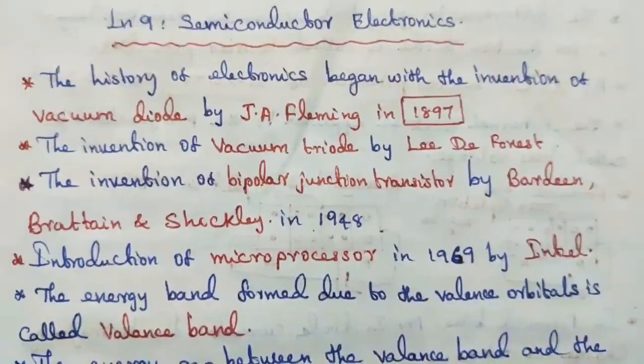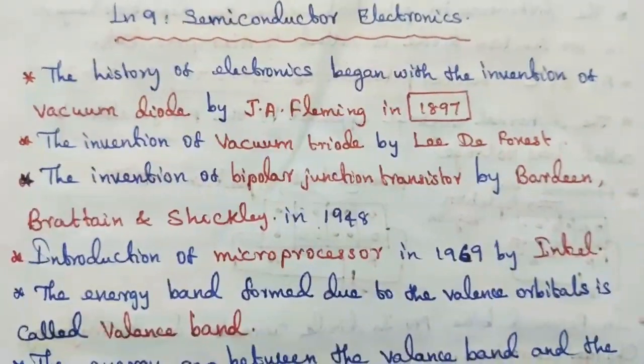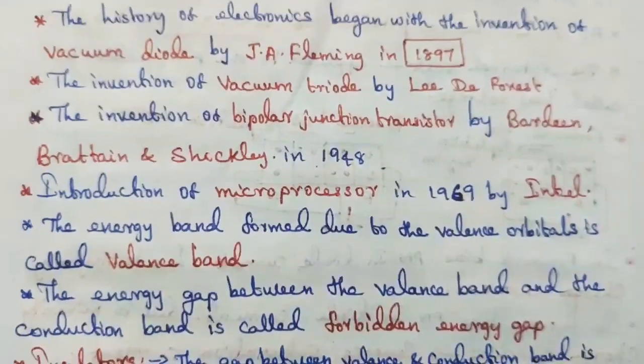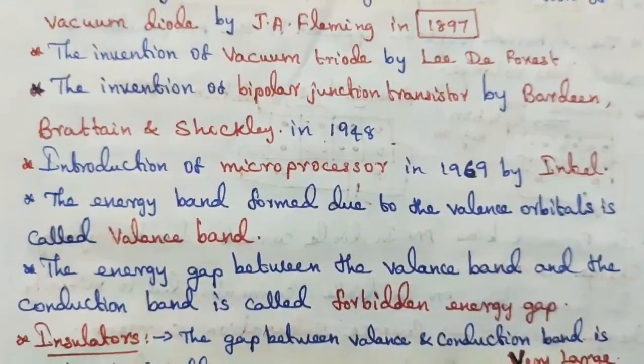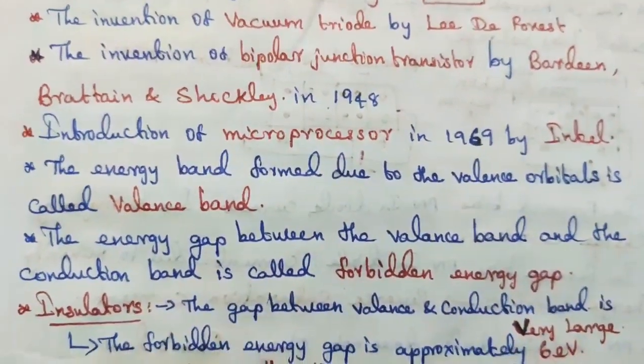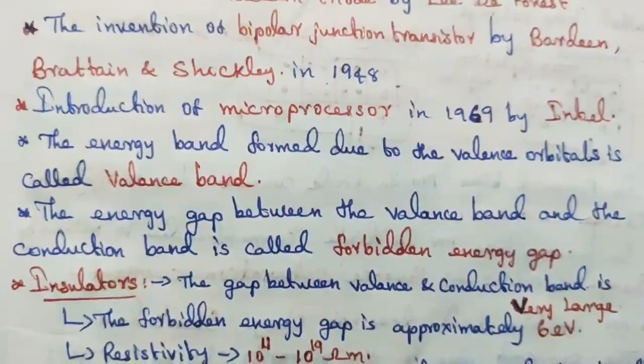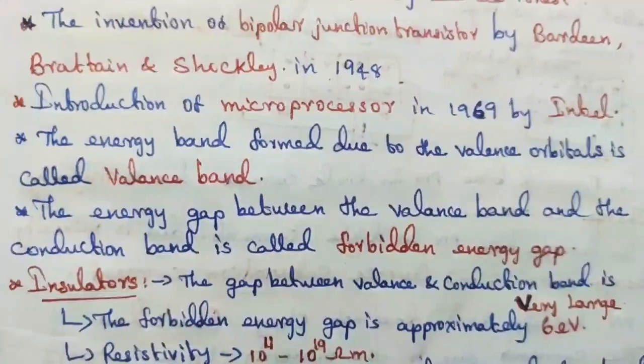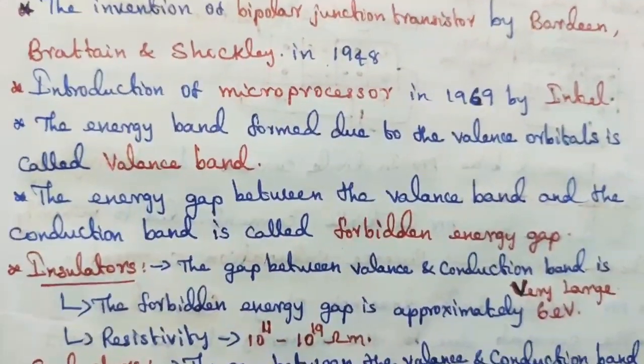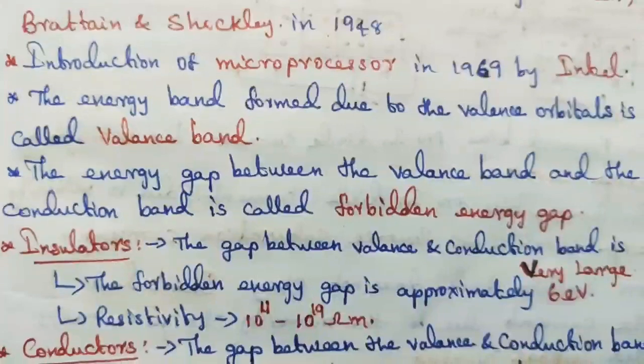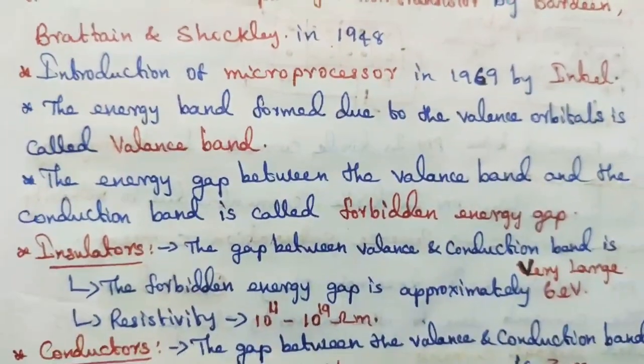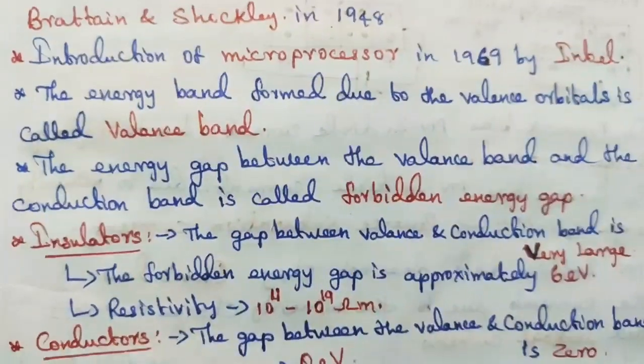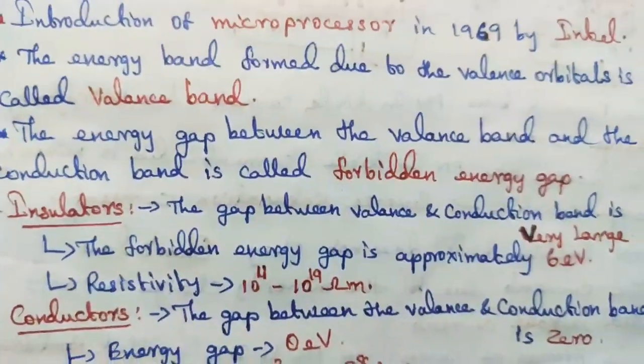The energy band formed due to the valence orbitals is called valence band. The energy gap between the valence band and the conduction band is called forbidden energy gap. In insulators, the gap between the valence band and the conduction band is very large. The forbidden energy gap is approximately 6 electron volts. The resistivity is 10 power 11 to 10 power 19 ohm meter.